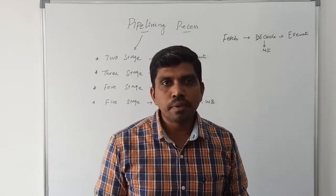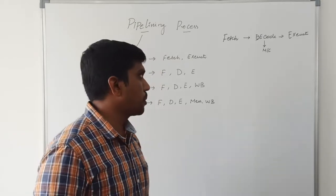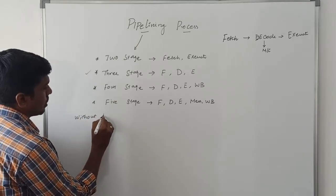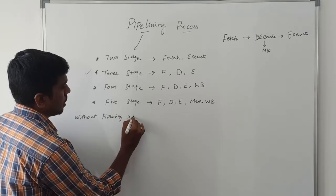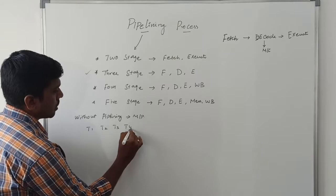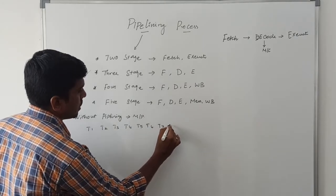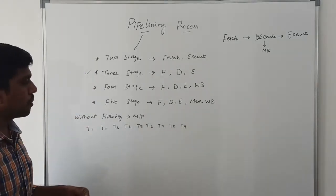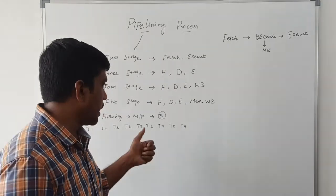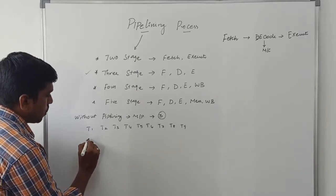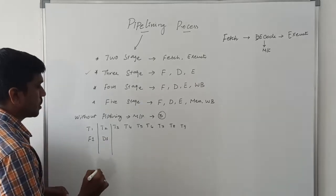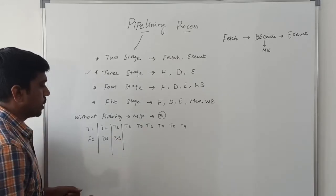Now we analyze what happens in a microprocessor without applying the pipelining process versus with pipelining. Let's consider three-stage pipelining. First, without pipelining — consider time cycles T1 through T9. For three instructions: during T1 fetch instruction one, T2 decode instruction one, T3 execute instruction one.